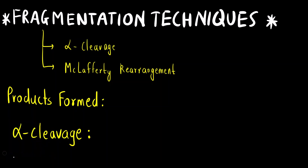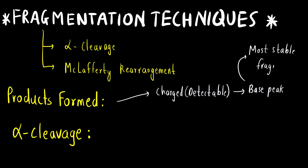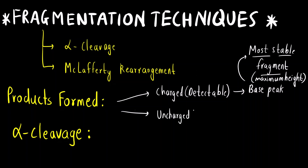What are the products formed in fragmentation techniques? There are two products formed. One is a charged fragment — that is detectable — which is a carbocation or any species having positive charge. This charged fragment will be the base peak. The base peak corresponds to the most stable fragment and is the peak with maximum height. Another fragment formed is uncharged, which is a free radical species that is undetectable and is not detected.